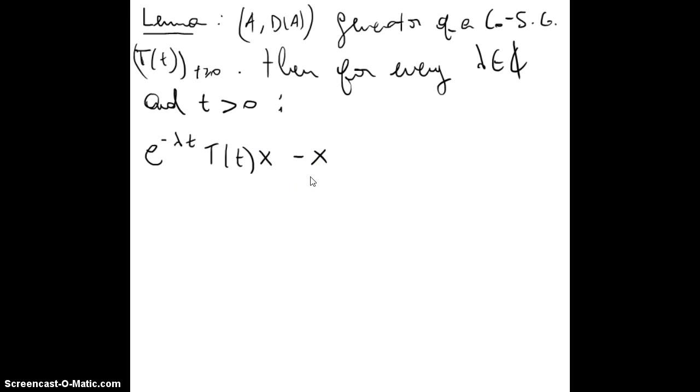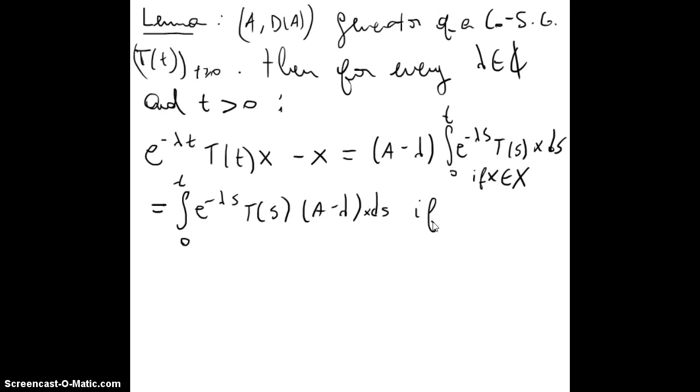e^(-λt) T(t)x minus x equals A minus λ times the integral from 0 to t of e^(-λs) T(s)x ds. This is for x in X. And this will also be equal to integral 0 to t of e^(-λs) T(s)(A minus λ)x ds. In this case, x is in the domain of A.